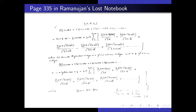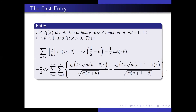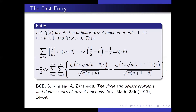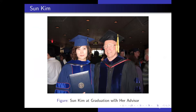Here is the page with the two formulas for the R₂(n) problem and the divisor problem. The first one involves J₁ Bessel functions and an extra parameter θ — the same Bessel functions as in the Hardy–Ramanujan formula. This was first proved by Sun Kim, Zaharescu, and myself in a 2013 paper. Here's a picture of Sun Kim at her PhD graduation about ten years ago; she had two advisors, and Kevin Ford was also an advisor.